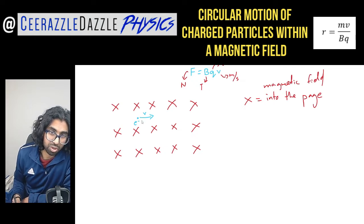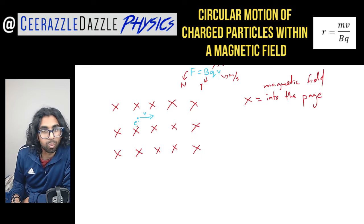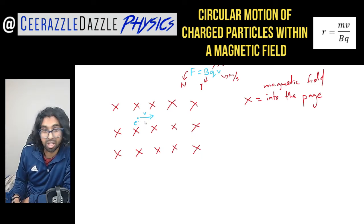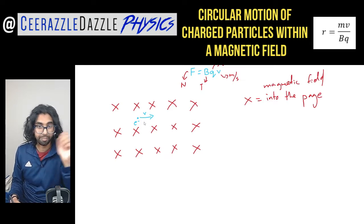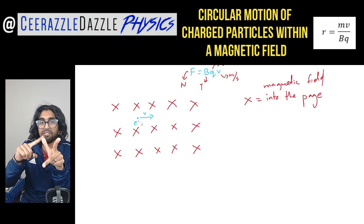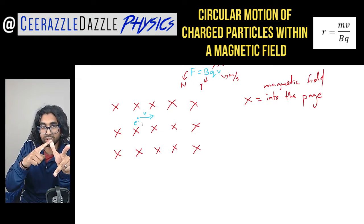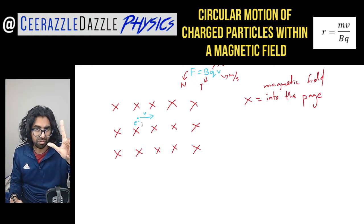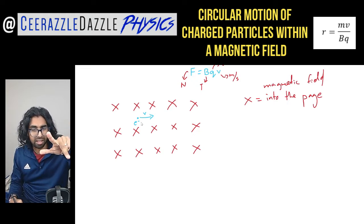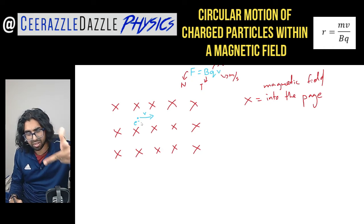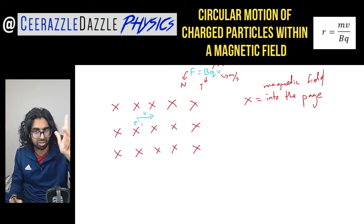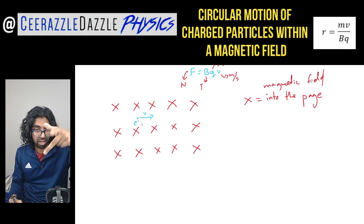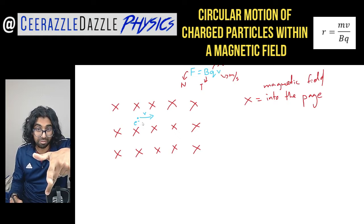We now know that the charged particle is moving within the field. Which way would the force be on this electron? You can use Fleming's left-hand rule to solve this. In Fleming's left-hand rule — FBI — F stands for the force, B stands for the magnetic flux density, and I stands for the current. These are the directions; notice they are 90 degrees to each other. To work out the force, orientate your hand in terms of the magnetic flux density and the current directions. The field is going into the page — use your left hand, not the right hand.